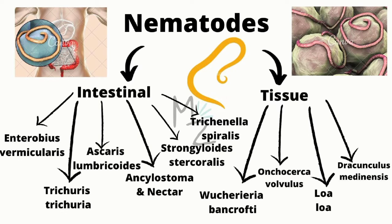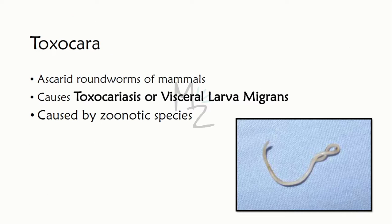Intestinal nematodes include Enterobius vermicularis, Trichuris trichiura, Ascaris lumbricoides, Ancylostoma, Necator americanus, Strongyloides, and Trichinella spiralis. Tissue nematodes include Wuchereria bancrofti, Onchocerca volvulus, Loa loa, and Dracunculus medinensis. Today we discuss nematodes whose larvae cause diseases.